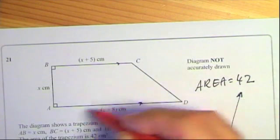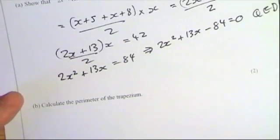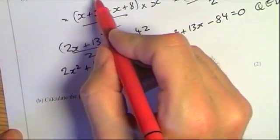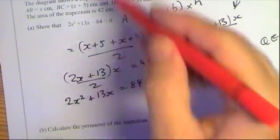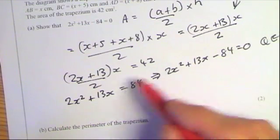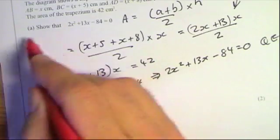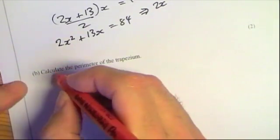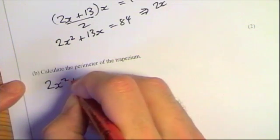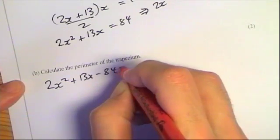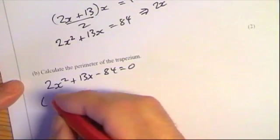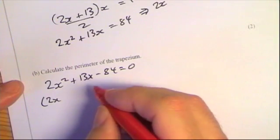To calculate the perimeter of the trapezium I need the side lengths, so first I must find x by solving the equation. Even if you couldn't prove the equation in the first part, you can still use the equation given there — don't give up on a question like this. So I'm going to solve 2x² + 13x − 84 = 0 by factorising, which should be straightforward.